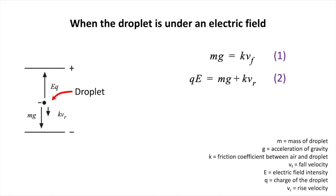Where E is the electric intensity, q is the charge carried by the drop, and vr is the velocity of rise. In both cases, there is some air resistance, but we can consider it insignificant.